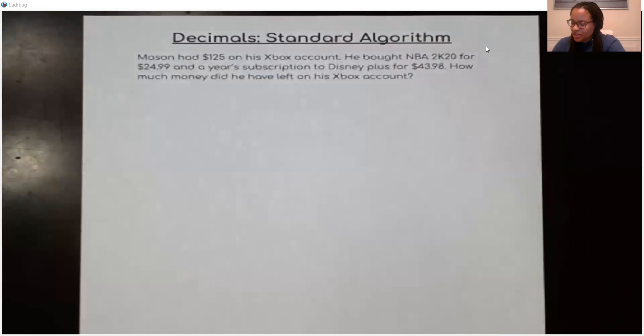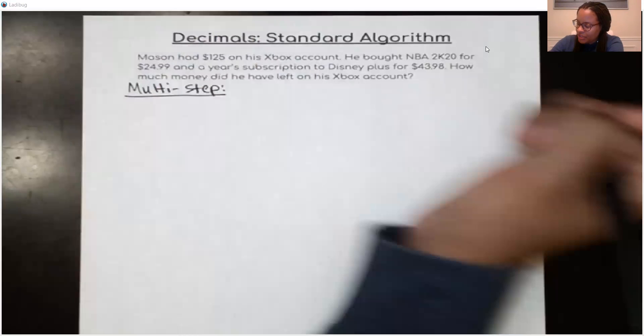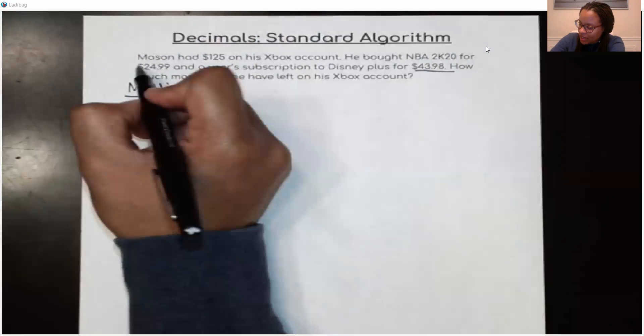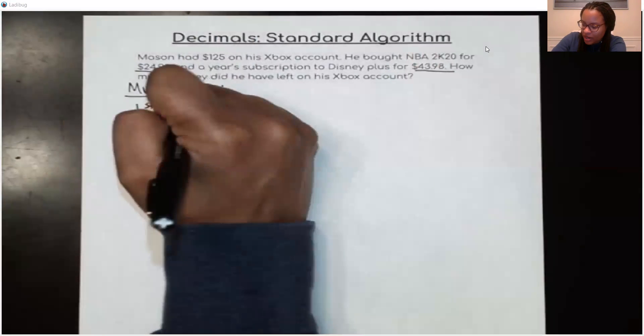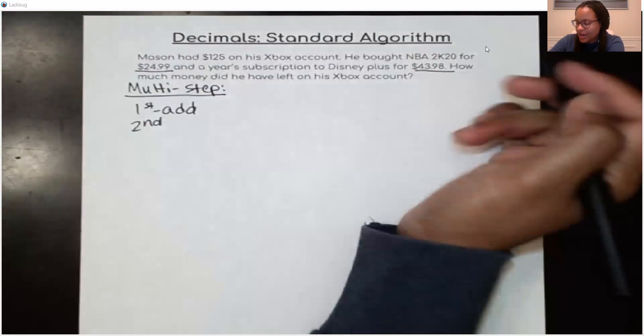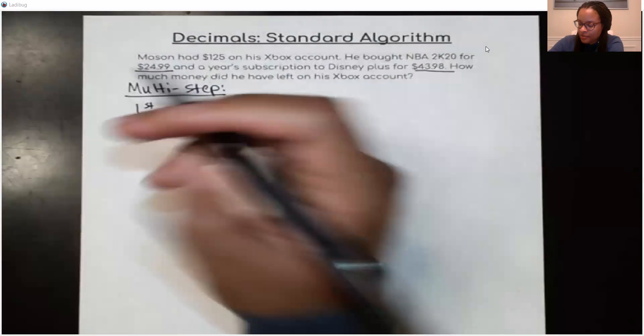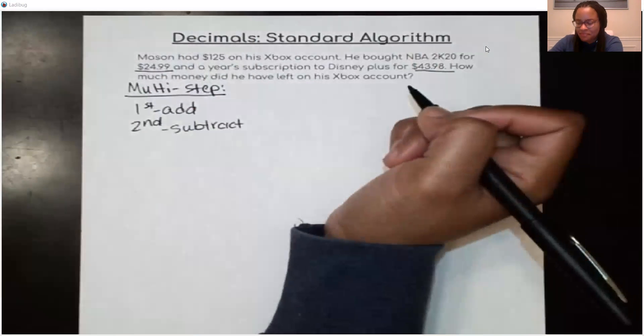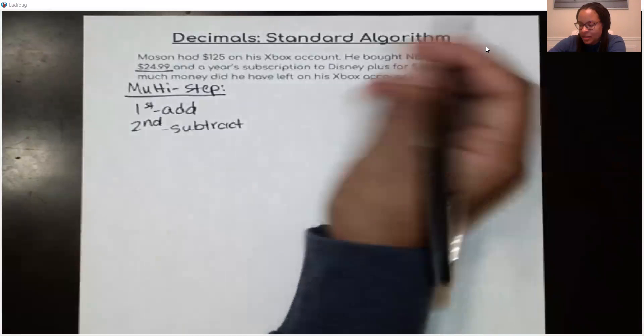So it seems like this is going to end up being a multi-step problem where the first step looks like I'm going to have to add the Disney Plus subscription and the NBA 2K20 game that he bought. So first, I'm going to add those two products together. And then second, I'm going to have to subtract the total amount of what he bought from how much money he already had on his account of the $125. So I'm going to subtract on the second step. And before I even get started with the exact amount of money that he has left on his account, I'm going to estimate first.